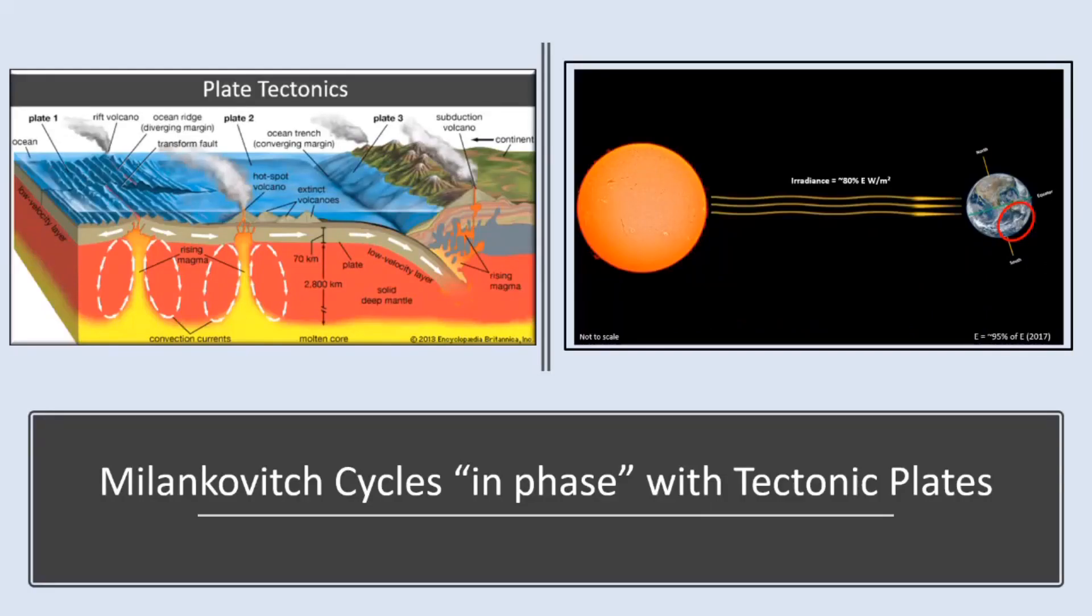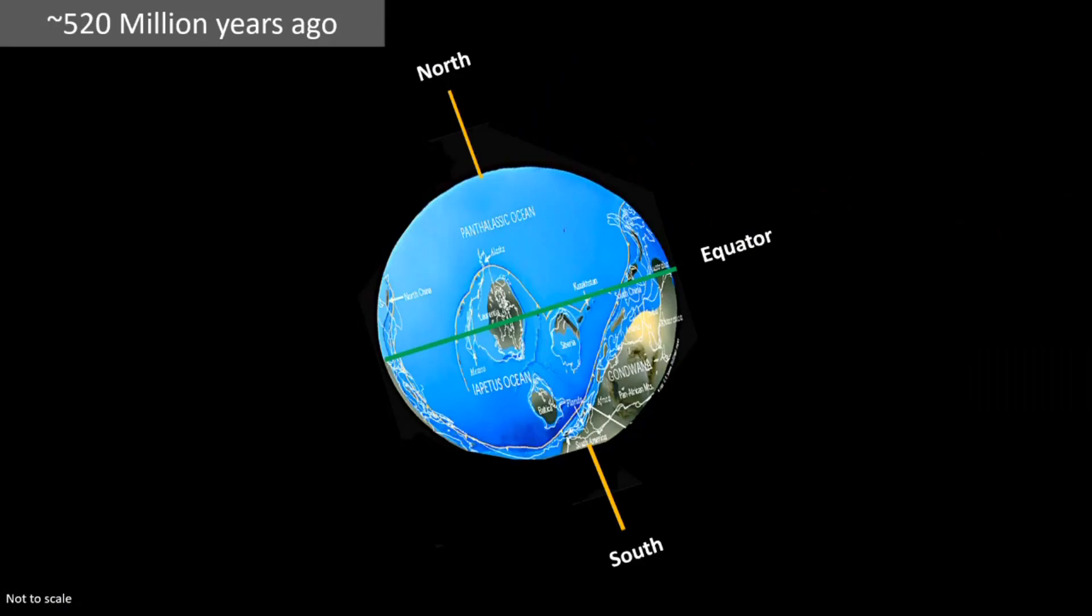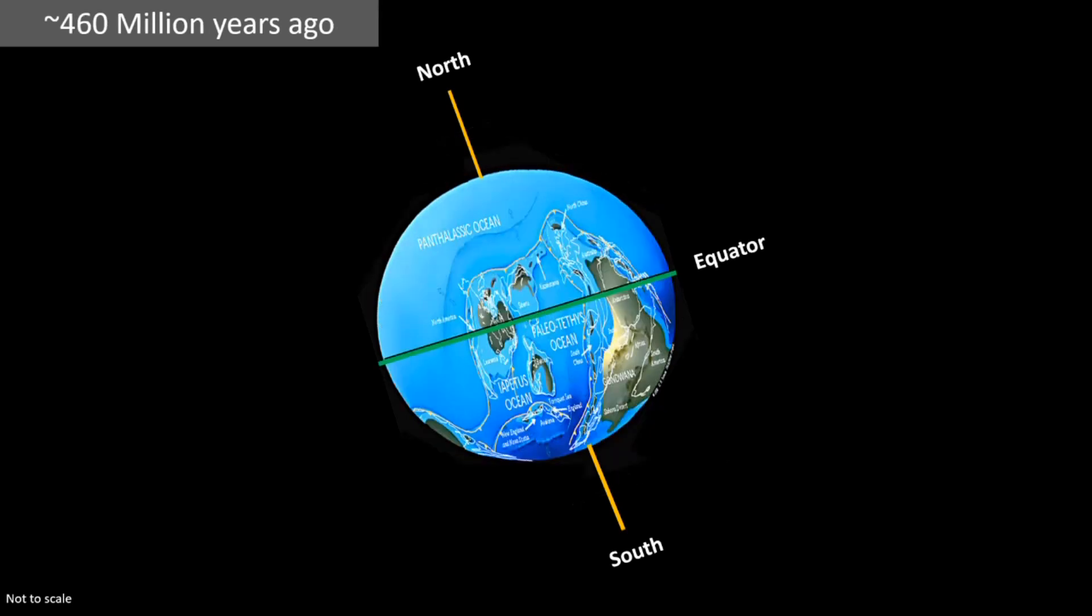We are now able to witness a very nice example of components of the causal network acting in phase with each other to produce a sudden transition. 520 million years ago, Gondwana was positioned roughly as we see it here. Over the next 60 million years, the movement of the tectonic plates gradually shifted the continent.